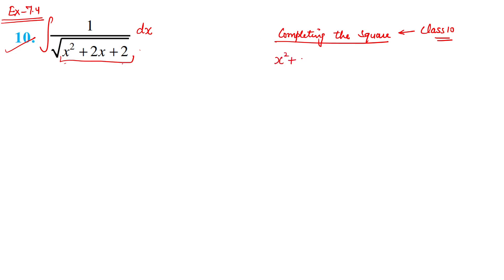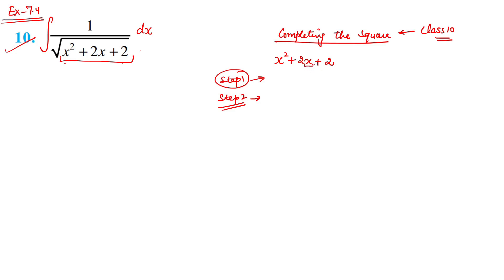Step number 1: check the coefficient of x². The coefficient here is 1, so there is no problem. If it is not 1, you divide and multiply by that number to make it 1. Step number 2: find the x term. Here the x term is 2x, and half of the coefficient of x is 1. Step number 3: add the square of that half-value and subtract it as well.